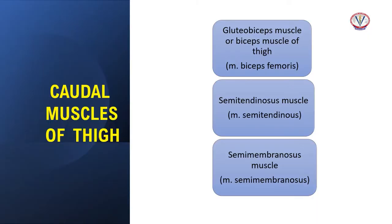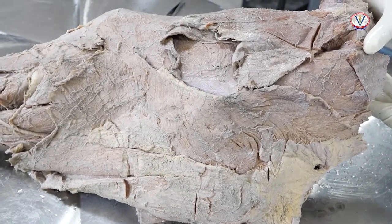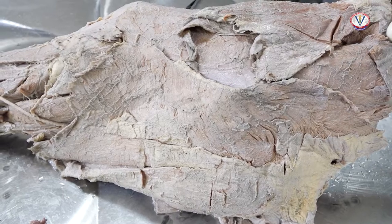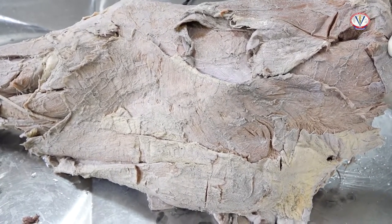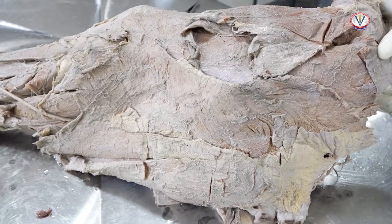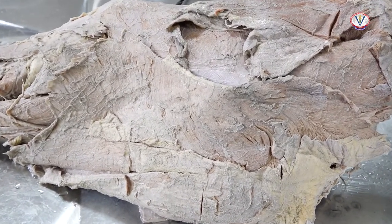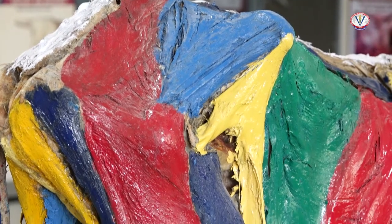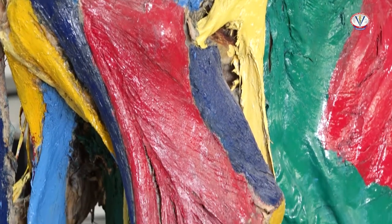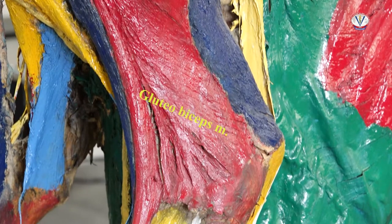The caudal muscles of thigh comprise gluteo-biceps or biceps femoris, semitendinosus muscle, and semimembranosus muscle. The gluteo-biceps or biceps femoris is the largest and most lateral of the caudal muscles of the thigh. The vertebral head is firmly fused to the superficial gluteal muscle forming the gluteo-biceps in cattle and buffalo. The united muscle belly splits into two tendons of insertion.